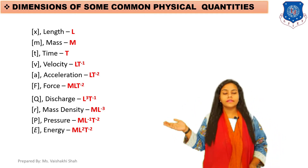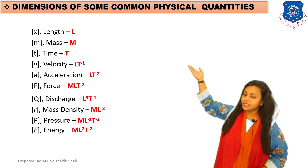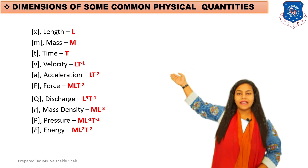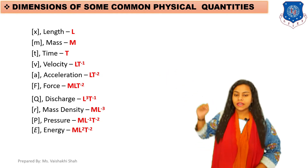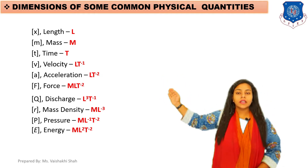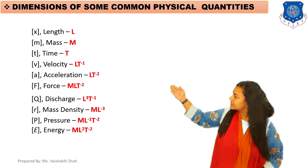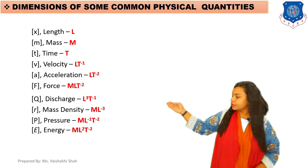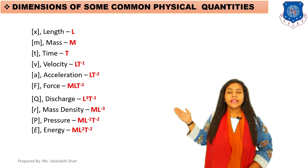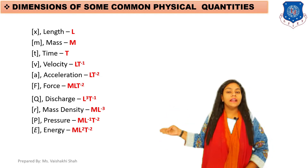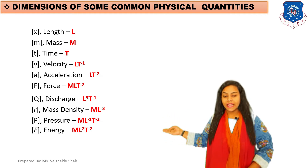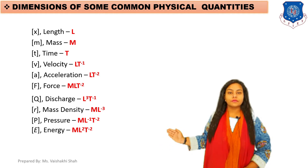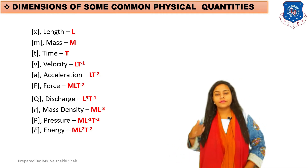Here are some basic dimensions of common physical quantities: length is L, mass is M, time is T, velocity is L T raised to minus 1, acceleration is L T raised to minus 2, force is M L T raised to minus 2, discharge is L cubed T raised to minus 1, mass density is M L raised to minus 3, pressure is M L raised to minus 1 T raised to minus 2, and energy is M L squared T raised to minus 2.